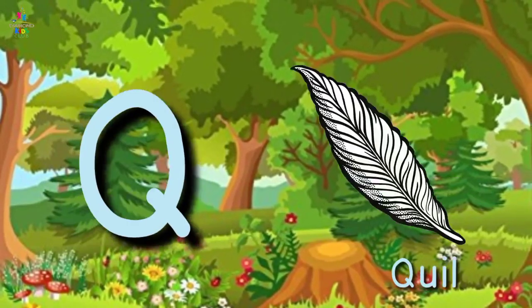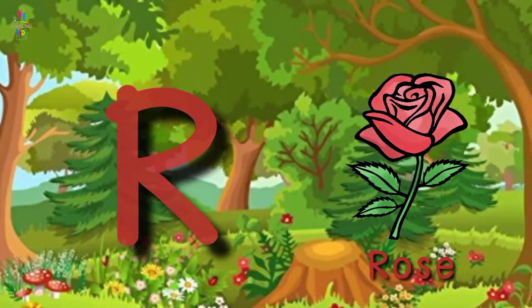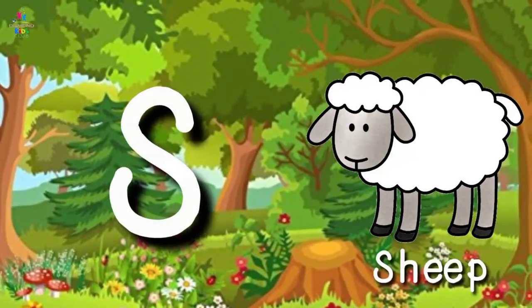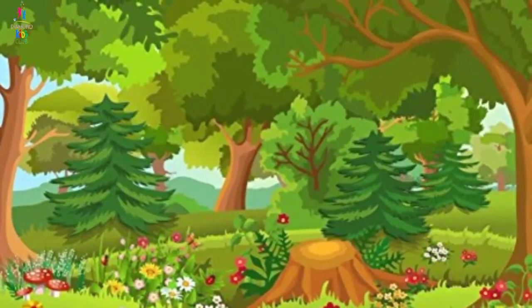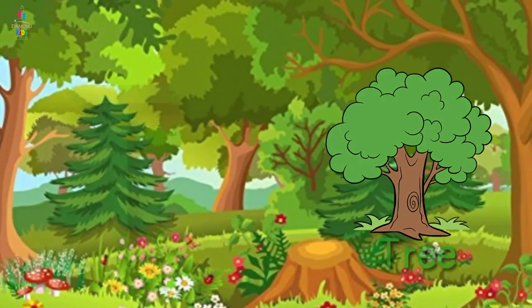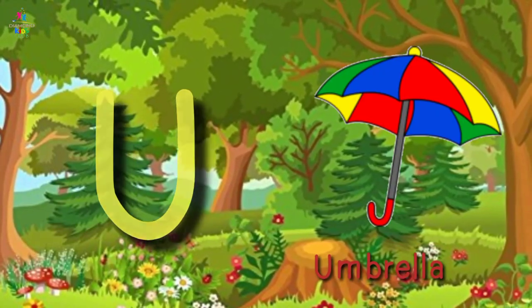Q for quill, R for rose, S for ship, T for tree, U for umbrella.